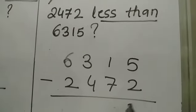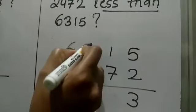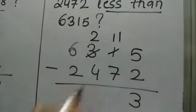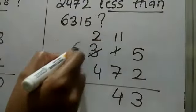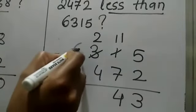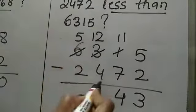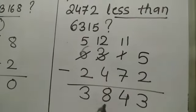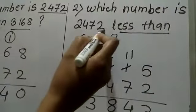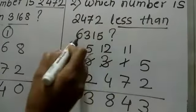5 minus 2 is 3. Now 7 cannot be subtracted from 1, so I take a borrow of 1 from the next place. I cut 3, write 2 here, and this will become 11. 11 minus 7 is 4. Again 4 cannot be subtracted from 2, so I take a borrow of 1 from the next place. I cut 6, write 5 here, and this will become 12. 12 minus 4 is 8, and 5 minus 2 is 3. So the answer is 3843. The number 3843 is 2472 less than 6315.